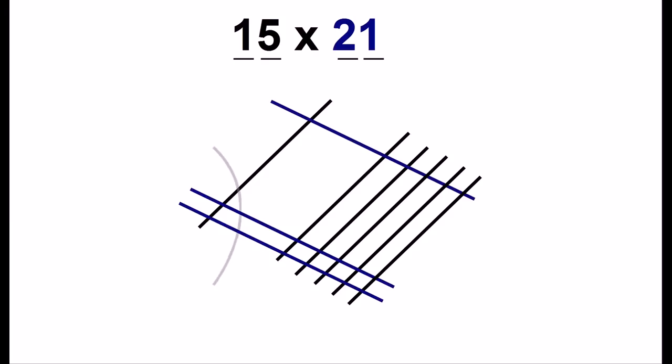We will again group the different lines. Here we have five dots. In the middle, we have 11 dots. And the other end, we have two dots.